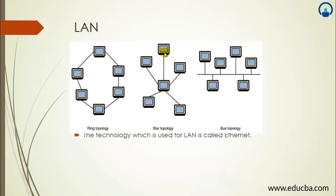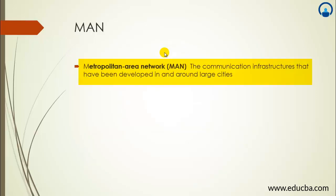The second type of network is MAN, the Metropolitan Area Network. It is a network developed in and around cities. When two or more computers or network devices are connected to each other at different locations but within the same metropolitan area, we call it a MAN. For example, if HDFC Bank has an office in Andheri and also in Borivali, those offices are connected in a MAN.